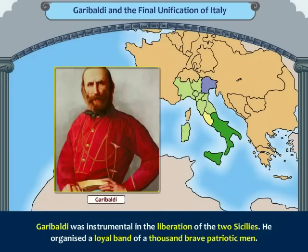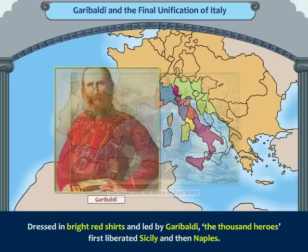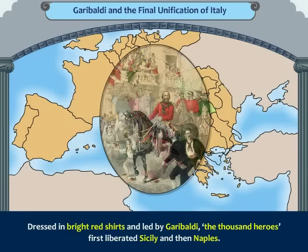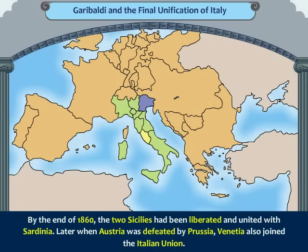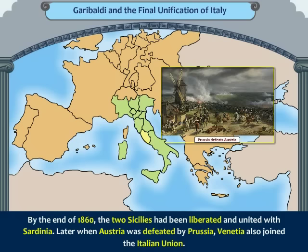Garibaldi was instrumental in the liberation of the Two Sicilies. He organized a loyal band of a thousand brave patriotic men. Dressed in bright red shirts and led by Garibaldi, the thousand heroes first liberated Sicily and then Naples. By the end of 1860, the Two Sicilies had been liberated and united with Sardinia.